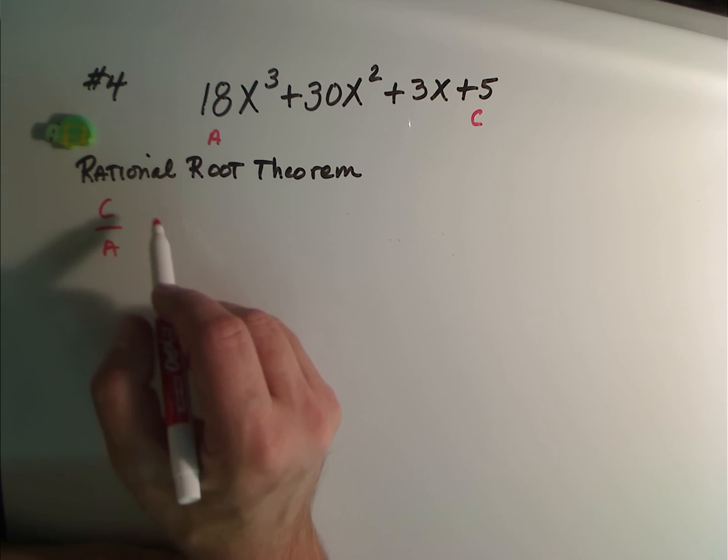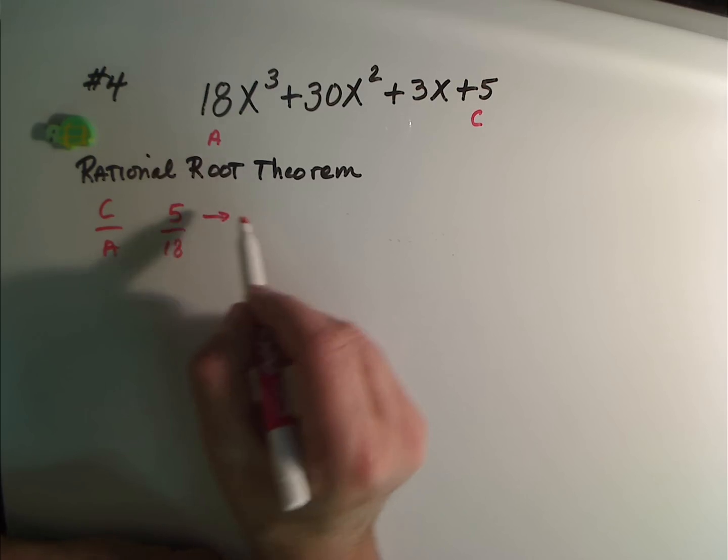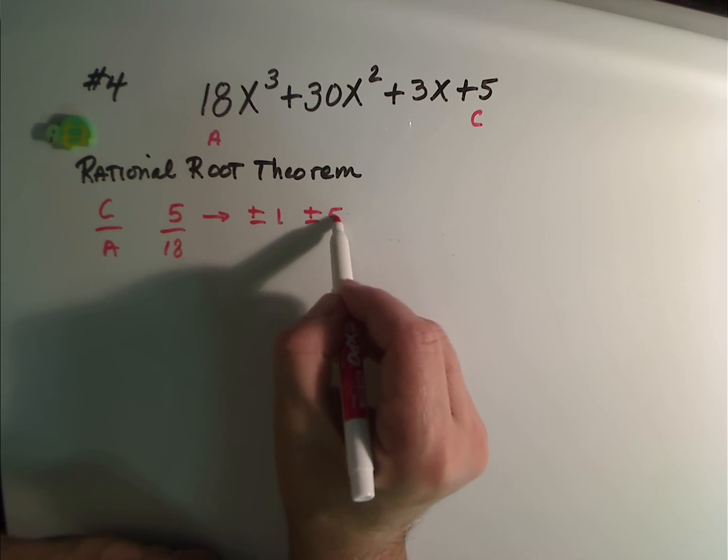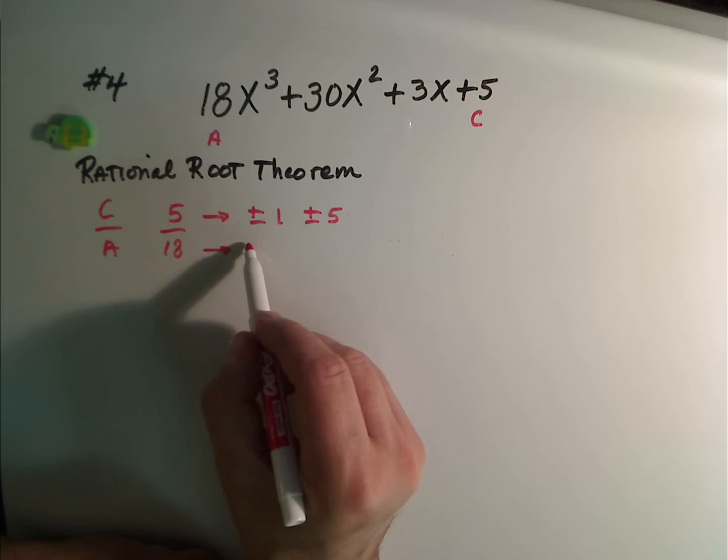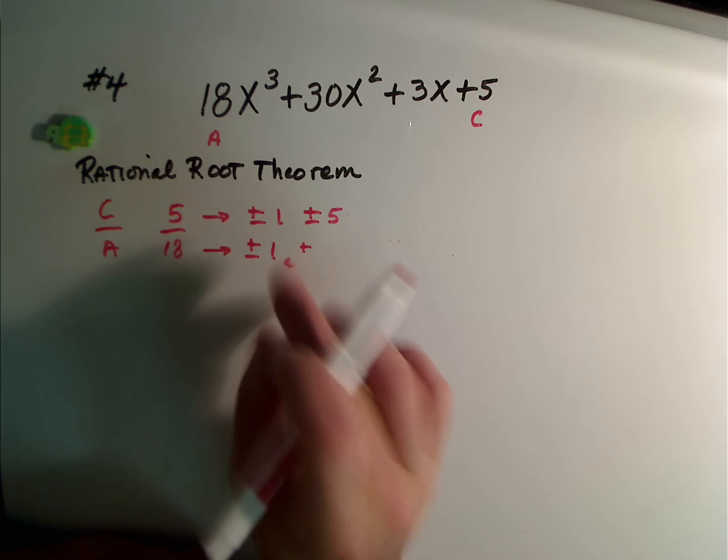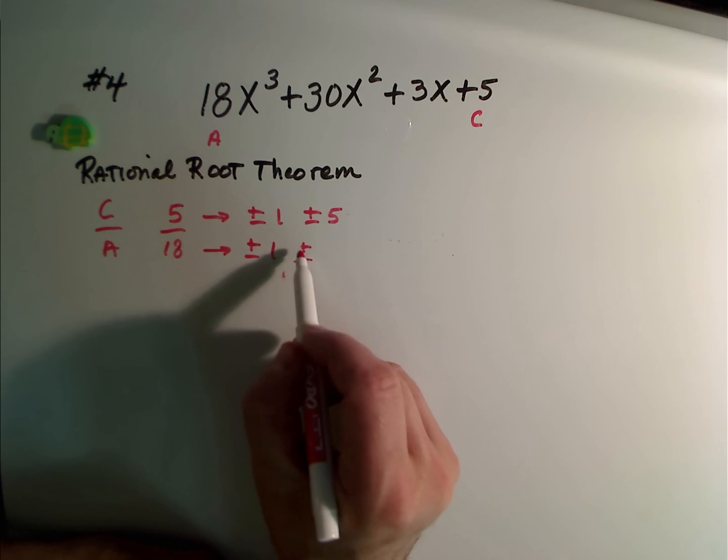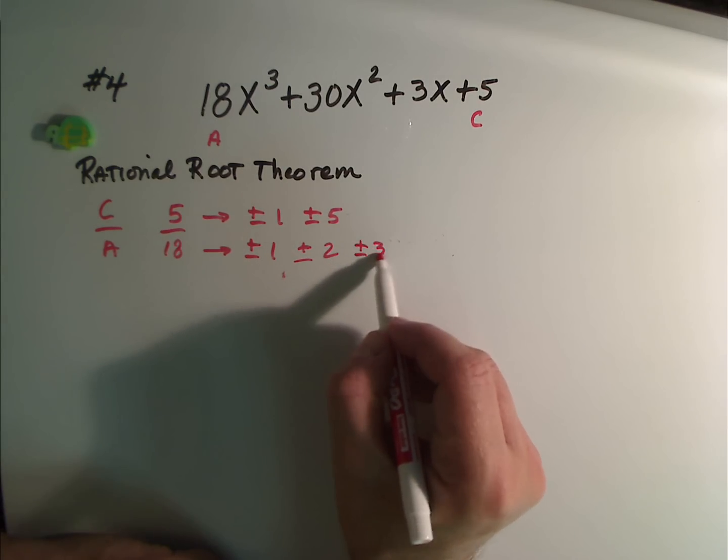So what we've got here is the factors of 5 over the factors of 18. Factors of 5 are pretty easy. They're plus or minus 1 and plus or minus 5. But 18 has a lot of factors. We've got plus or minus 1, plus or minus 2. 3 goes into 18 six times, so plus or minus 3.